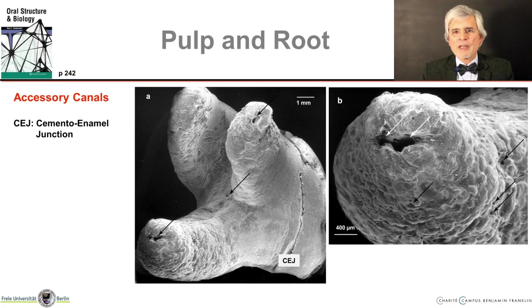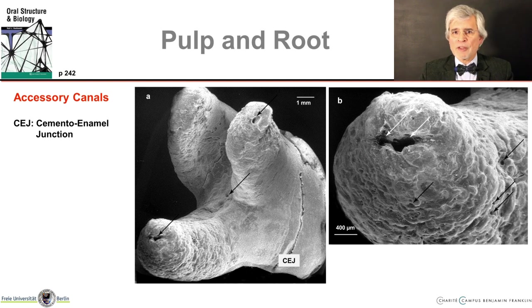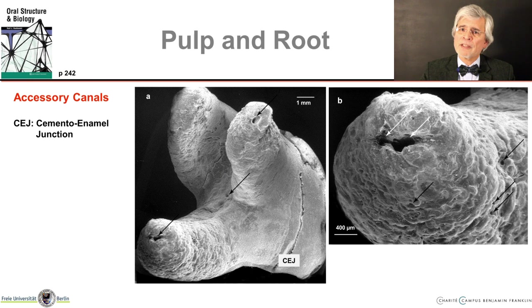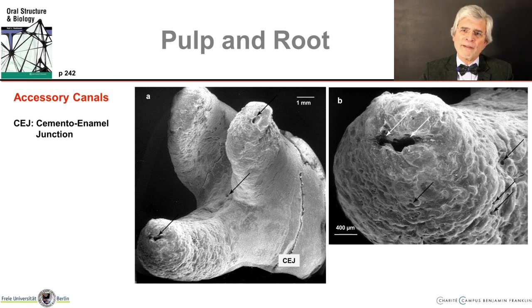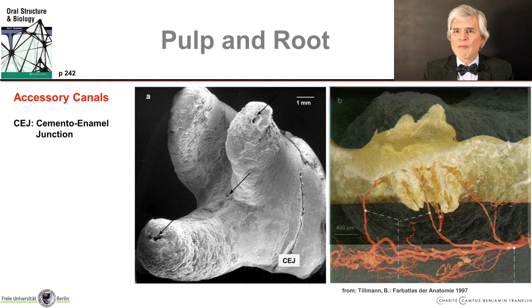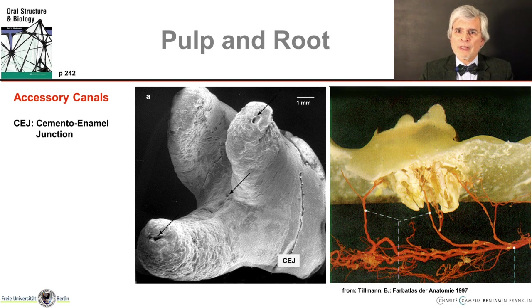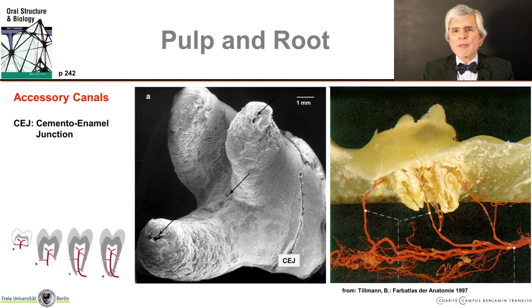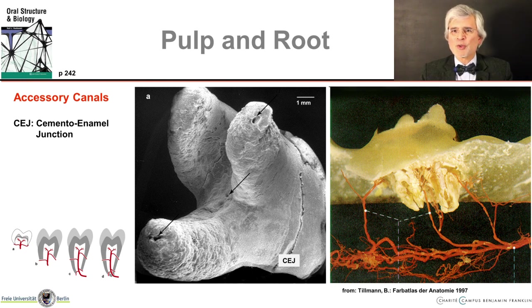Some impressive images from the scanning electron microscope illustrate this. Here you can see a molar with its roots seen from the apical side — the many foraminae at the root tips are immediately noticeable, and the longer you look, the more accessory canals you will see. It's a bit like spending a starry night on a rowing boat on a lake — the longer you look, the more stars you see. Another preparation from Bernd Tillmann's Atlas shows how blood vessels run not only apically but also laterally into the roots — and this is where the many lateral canals are located.